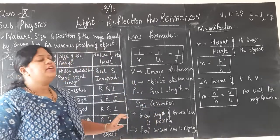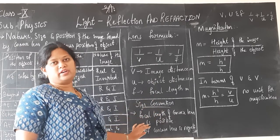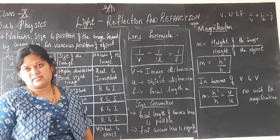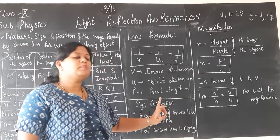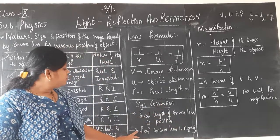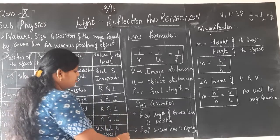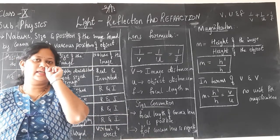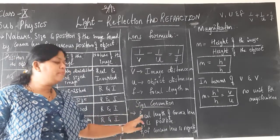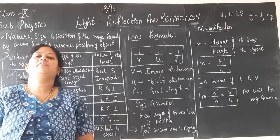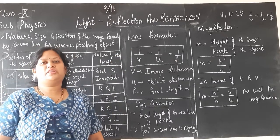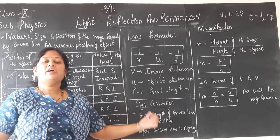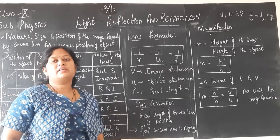We need not study the sign convention separately for the lens. Whatever you have learnt for the mirror, the same thing applies here. All heights above the principal axis are taken as positive, and all heights below the principal axis are taken as negative. One additional point: focal length of a convex lens is positive, whereas focal length of a concave lens is negative.